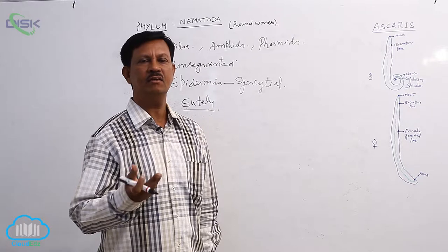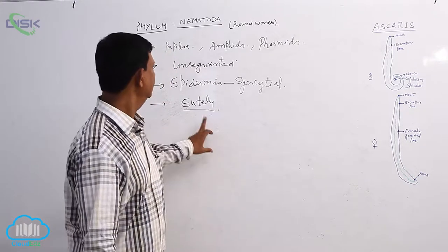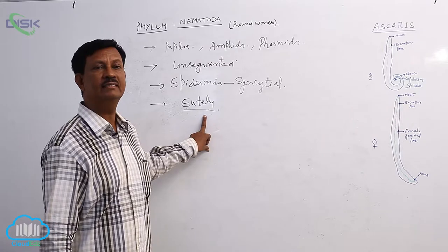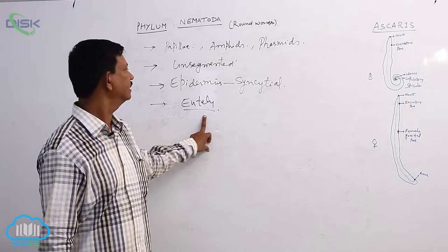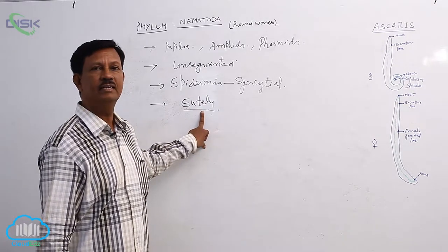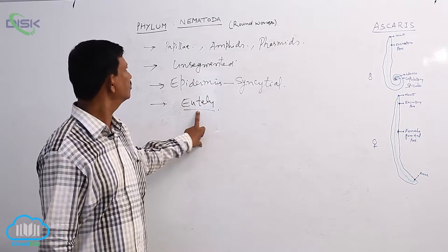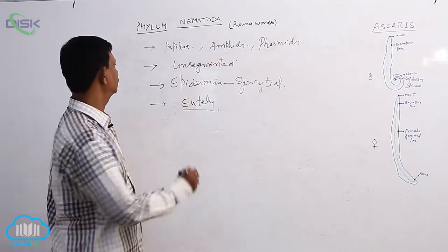But here the cell number does not increase, but cell sizes gradually increase. Such type of condition is known as eutely. This eutely is also an important character of the phylum Nematoda.